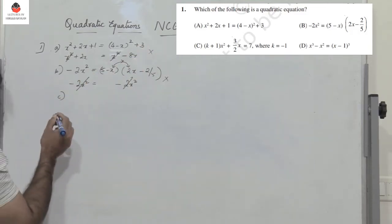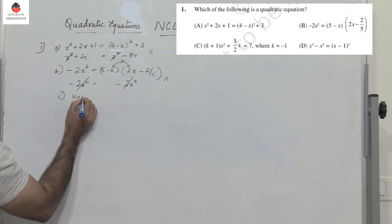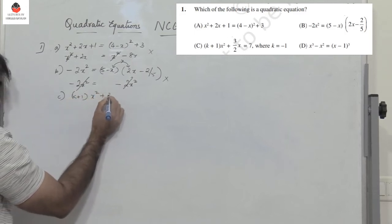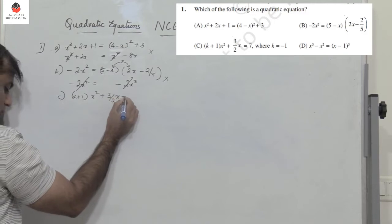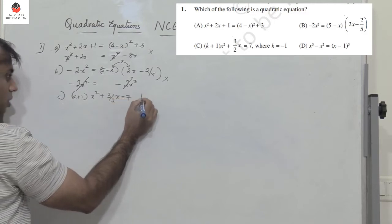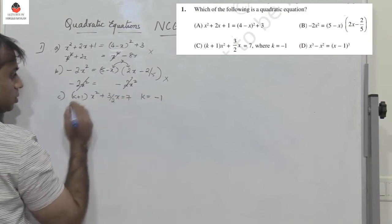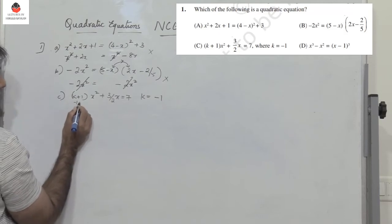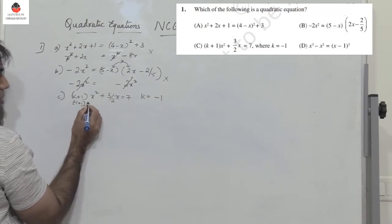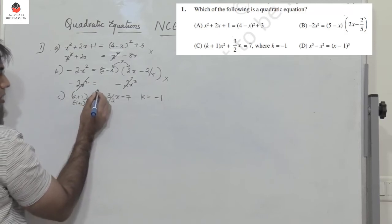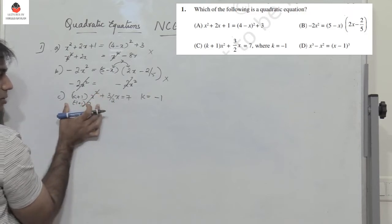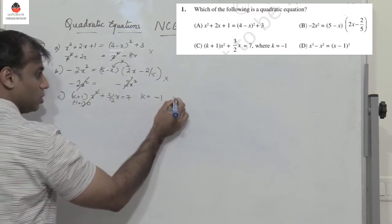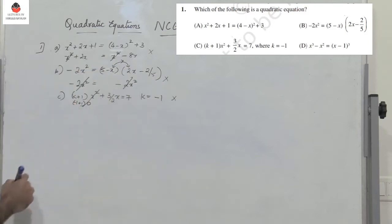Option C: k plus 1 into x squared plus 3 by 2x equals 7, where k equals minus 1. When k equals minus 1, minus 1 plus 1 gives 0. So 0 into x squared is 0 — this does not have the x squared term. This also is not a quadratic equation.